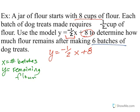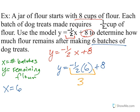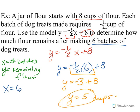It tells us six batches, so we know x equals six. Let's substitute that into our equation. So y equals negative one-half times six plus eight. Again, order of operations. Negative one-half times six is three. So y equals three, excuse me, negative three, because negative times positive is a negative. So y equals negative three plus eight, and when I add those together I end up with five. We would have five cups of flour remaining after making six batches of dog treats.